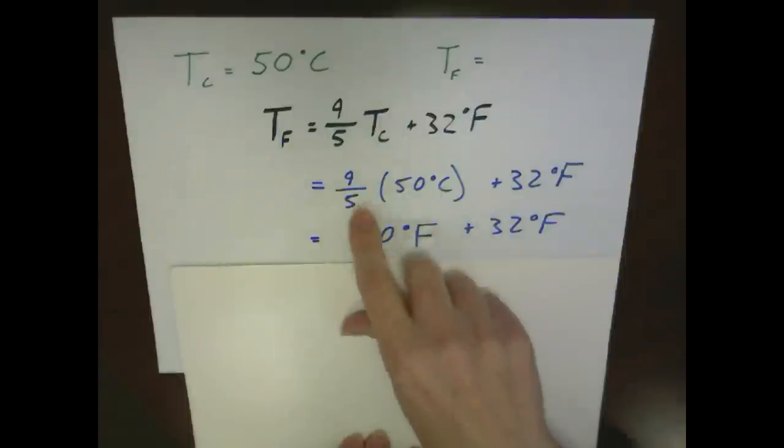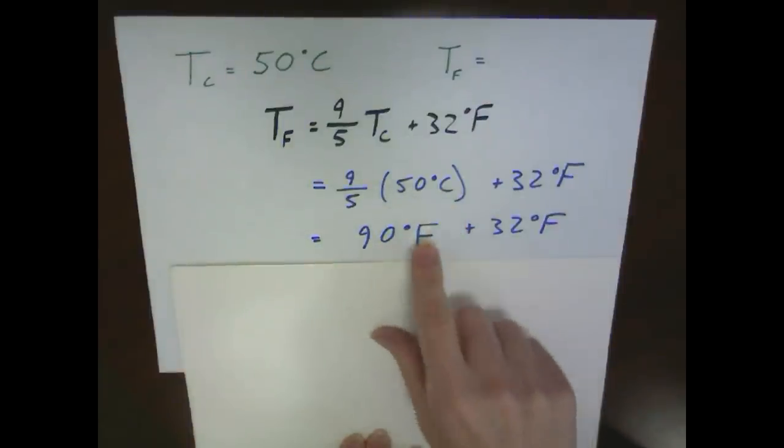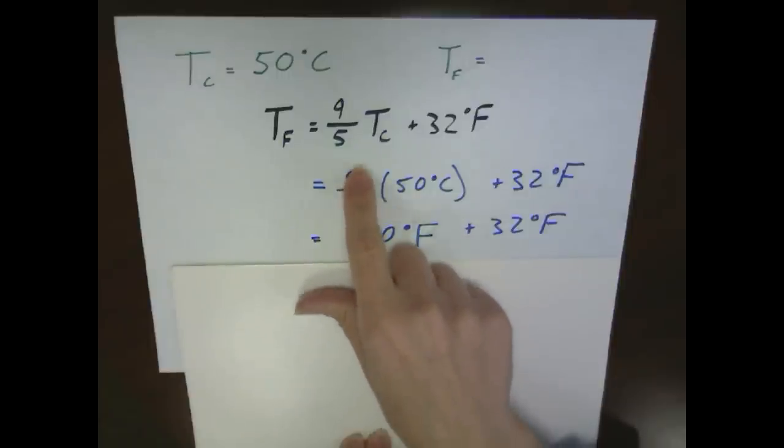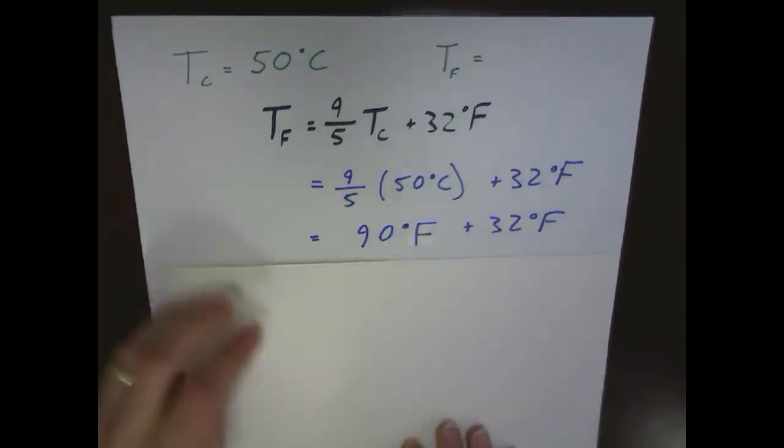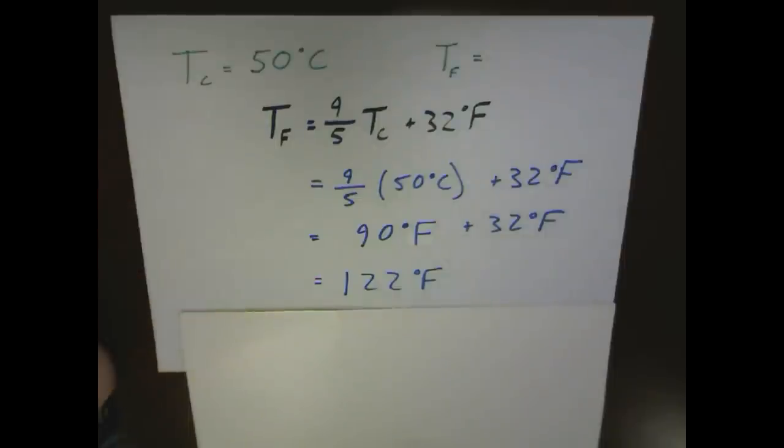Well the 9/5 of 50 degrees Celsius gives us 90 degrees Fahrenheit. It changed from Celsius to Fahrenheit because again these were our scale relationships of 9 degrees Fahrenheit for every 5 degrees Celsius. And we still have our offset of 32, giving us a final answer of 122 degrees Fahrenheit.